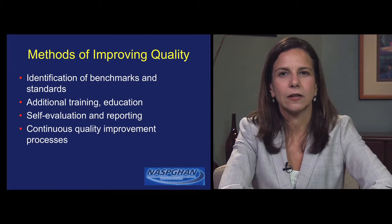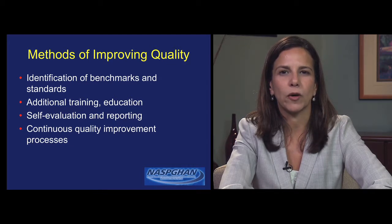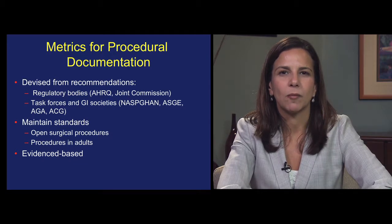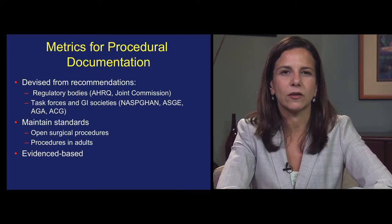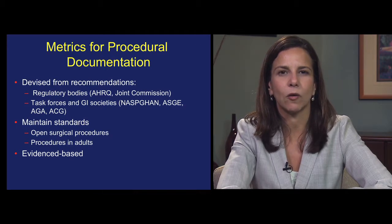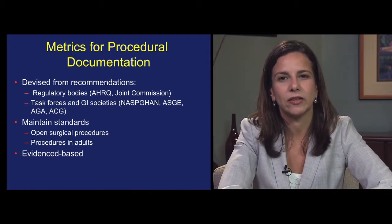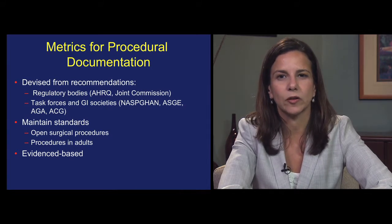Common methods for improving quality in healthcare include the identification of benchmarks and standards, the provision of additional training and education, the performance of self-evaluation and reporting, and engagement in continuous quality improvement processes. Quality in endoscopy can be promoted by adhering to various established metrics for procedural documentation. These metrics have been devised from recommendations of various regulatory bodies, including the Department of Health and Human Services Agency for Healthcare Research and Quality, as well as the Joint Commission, as well as those made by various task forces and gastroenterology societies, including NASPGHAN, the American Society of Gastrointestinal Endoscopy, the American Gastroenterological Association, and the American College of Gastroenterology. Generally speaking, pediatric procedural documentation is intended to maintain standards upheld in documentation of open surgical procedures, as well as procedures in adults. Whenever possible, they are evidence-based.